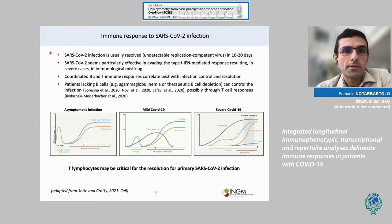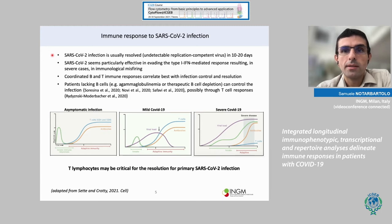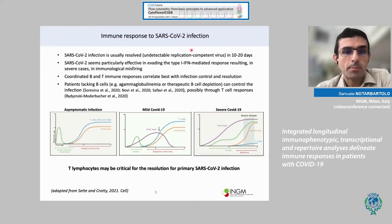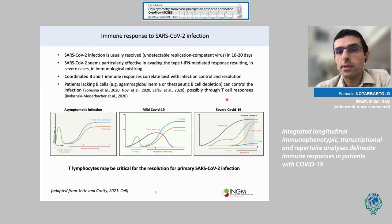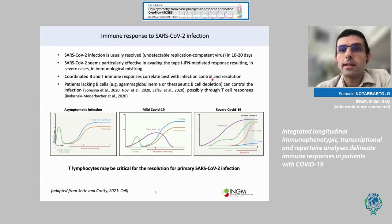SARS-CoV-2 infection usually resolves in a few weeks — normally in 10–20 days there is no more replication-competent virus. Still, in a proportion of infected people it can cause severe disease. This is apparently due to the fact that SARS-CoV-2 is very efficient in evading the type 1 interferon-mediated response by the innate immune system.